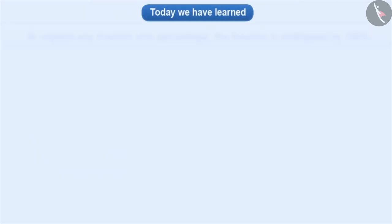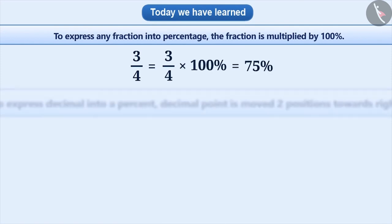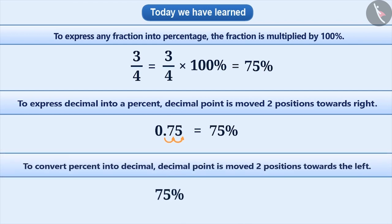Today, we have learned to express any fraction into percentage by multiplying it by 100%. To express decimal into percent, the decimal point is moved two positions towards the right, and conversely, to convert percent into decimal, the decimal point is moved two positions towards the left. In the next video, we will learn to find percent of a number and ratio to percent.